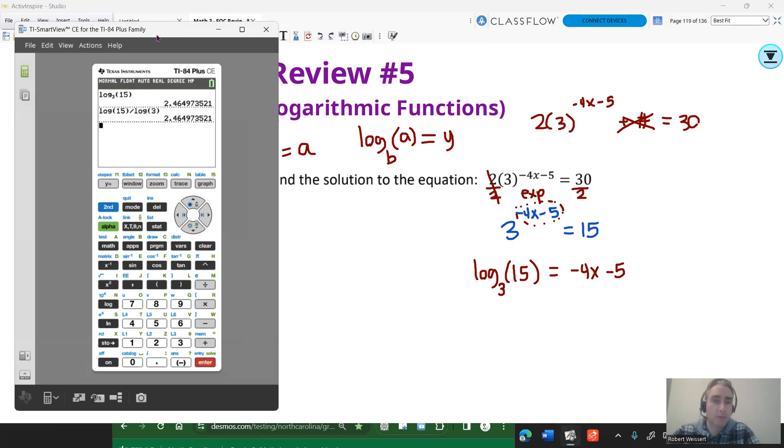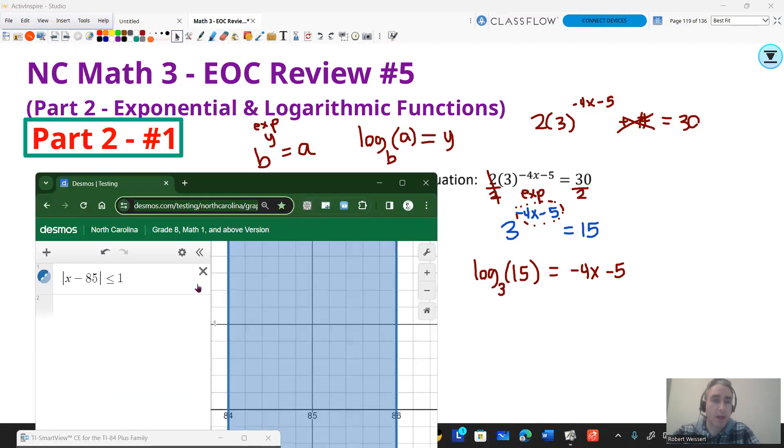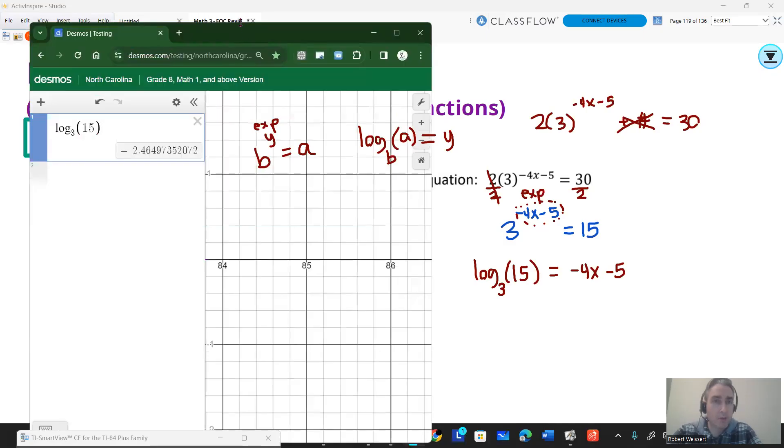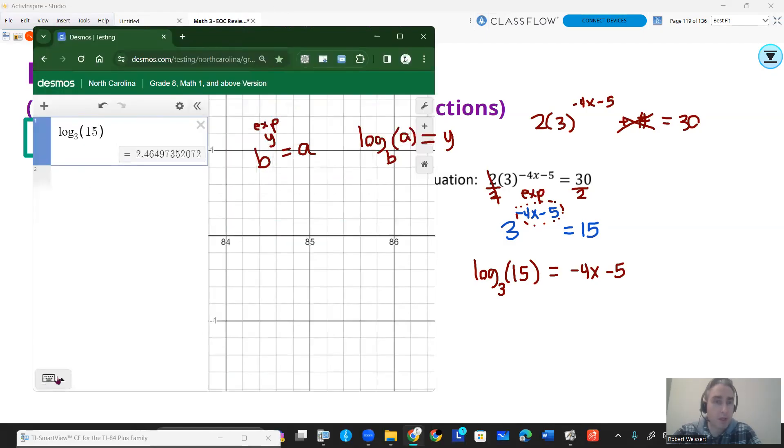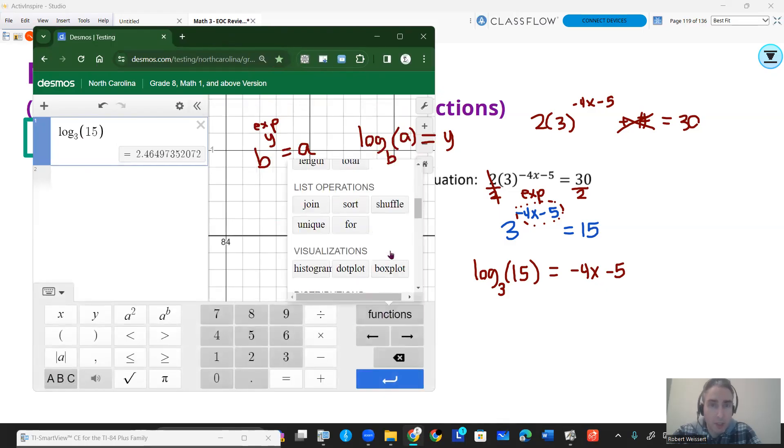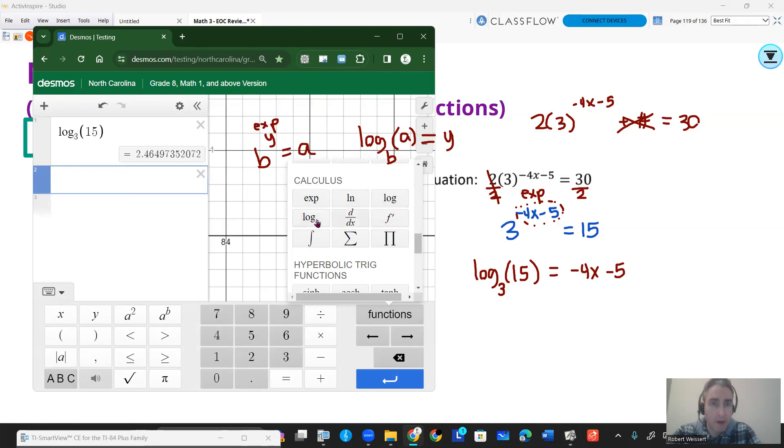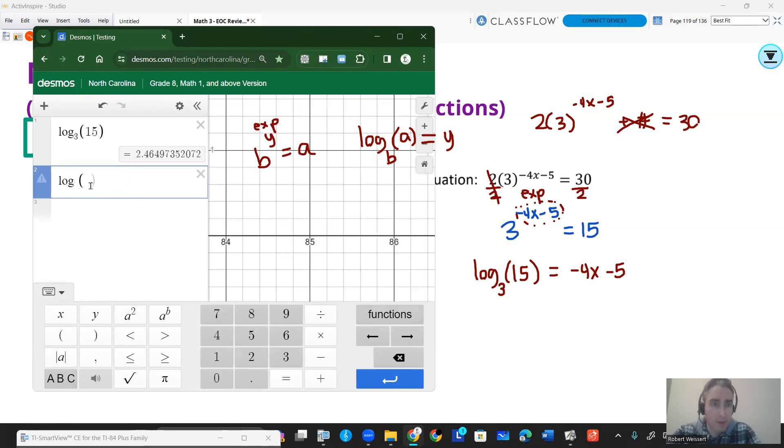In Desmos, since you all have access to Desmos, this would be the way to do it if you don't have a calculator at home. You would type in log, hit the shift minus, that underscore, 3, and then 15 in the parentheses. You can get that log function using the functions down here if you're so inclined, if you go down here and go to functions. It should be way down here, log base A. So if I go here and press log, then I can do it that way, too. But I find that to be kind of cumbersome. So just learn the keyboard shortcut on that, 2.465.